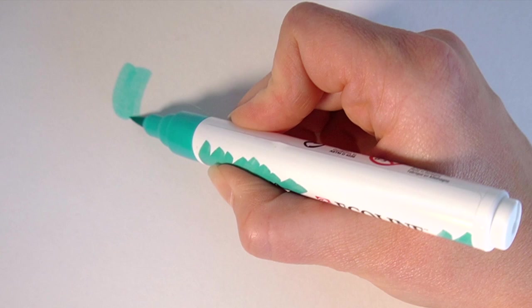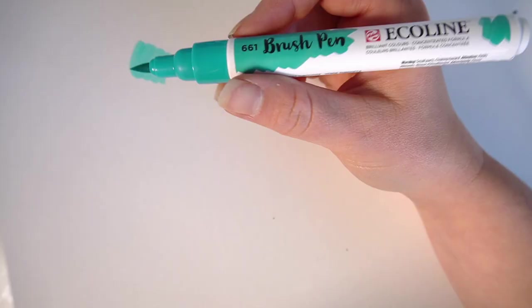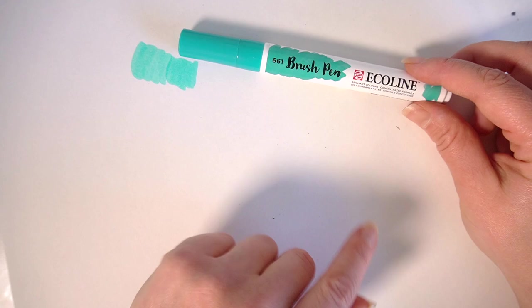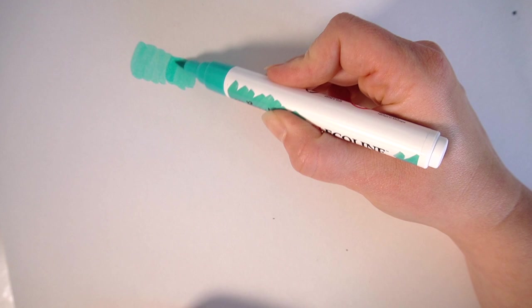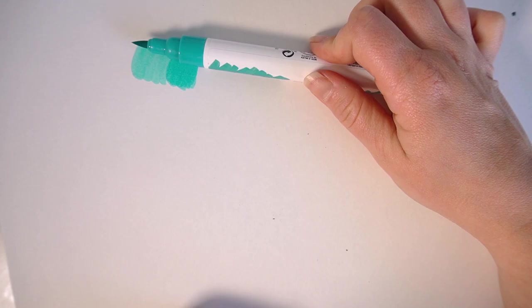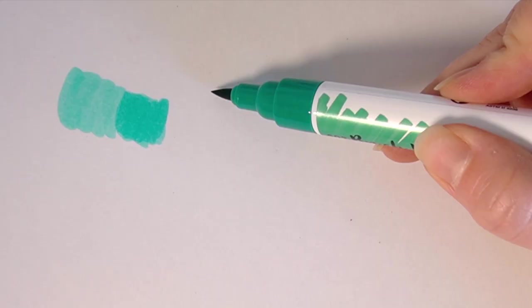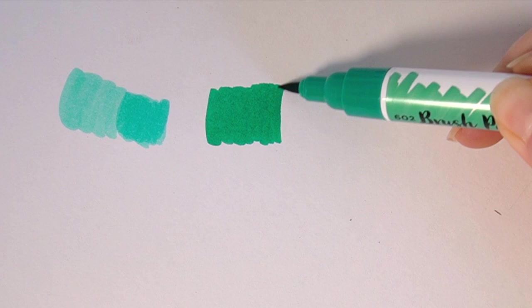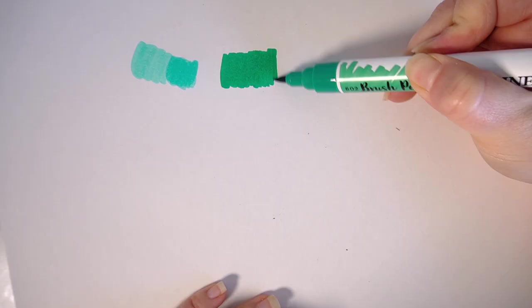So it does have a really nice soft nib. This one is 661. I think it's quite an accurate color to the cap. With a second layer, yeah with a second layer it looks a lot more accurate. Oh that's such a lovely color. I really do like that color. That's really pretty.